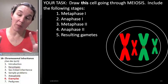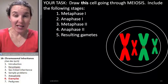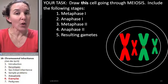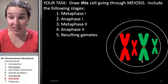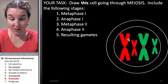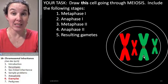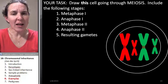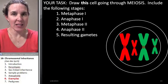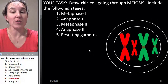Push pause and do this task: go through and draw a picture of this cell right here with two different chromosomes. It's a diploid cell with two different chromosomes. Draw that cell in each of these phases of meiosis and then draw the resulting gametes.